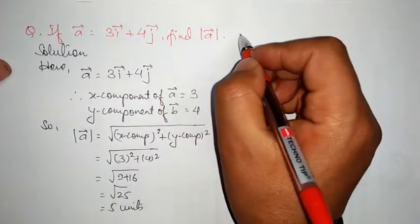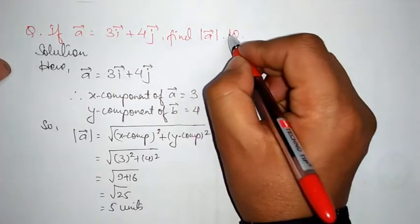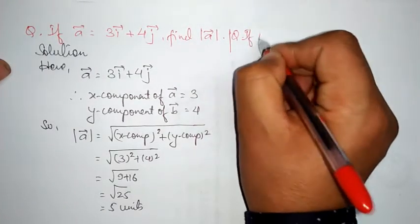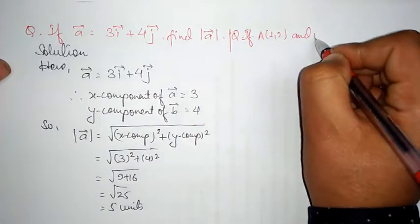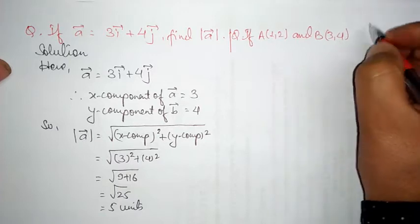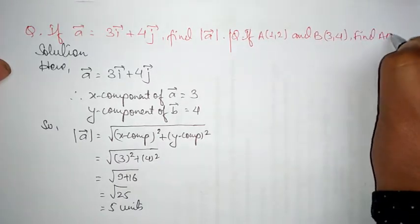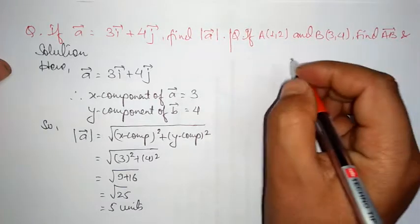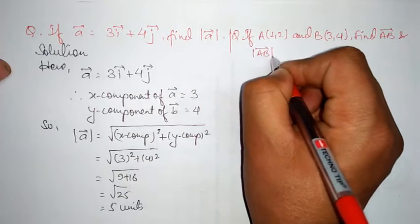Next question: if A is (1, 2) and B is (3, 4), find vector AB and the magnitude of vector AB.